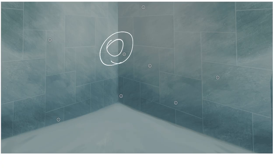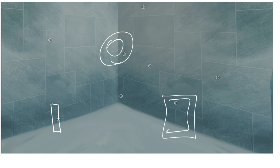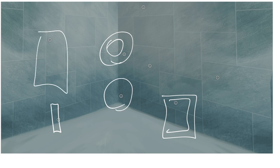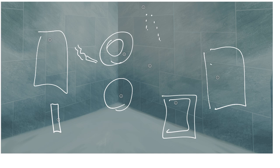To recap: Legionella is a gram-negative rod that stains poorly with gram stain — use silver stain instead. Culture it on charcoal yeast agar enriched with iron and cysteine. Legionella lives in water sources. Smokers and heavy drinkers are at high risk. You can diagnose it by detecting the antigen in the urine. Keep this in mind, because when we talk about Helicobacter pylori, the antigen is detected in the stool, not the urine.